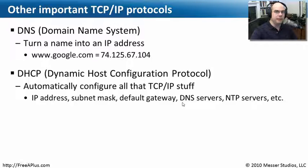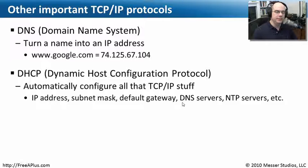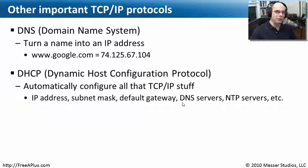So it goes and asks a DNS server what Google happens to be. Across the internet, there are many DNS servers that our computer will communicate with, asking: do you happen to know what google.com is? If that DNS server knows, it reports back. If it doesn't know, it asks the next DNS server it knows about — hey, can you tell me where Google is?